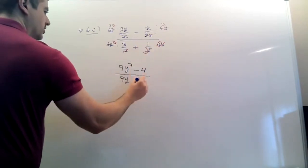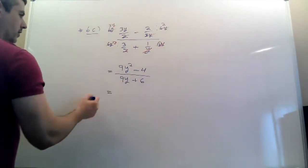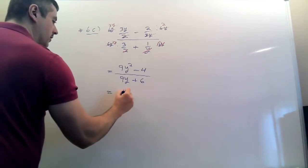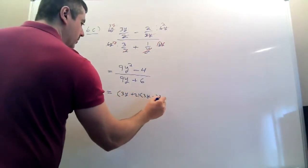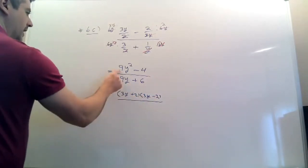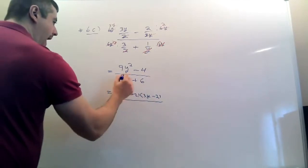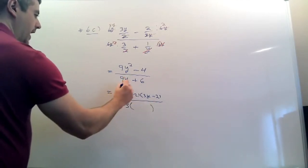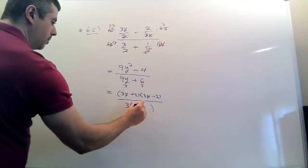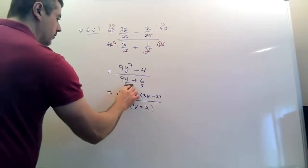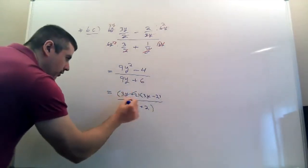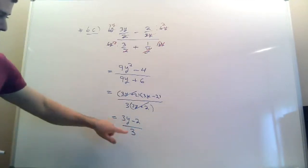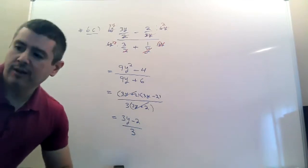So 6 times 1: do 3y times 3, which is 9y. Then 1 times 6 is 6 — that's tricky to spot. Some people try to cross out the nines, which is wrong. The top is a difference of squares: 3y plus 2 times 3y minus 2. The bottom: 6 and 9 are both divisible by 3, so factor out the GCF of 3. Divide away the 3 — 9y plus 6 divided by 3 gives 3y plus 2. Cross those out. You're left with 3y minus 2 over 3. Don't cross out the threes to get y minus 2 — the problem is over; that's your answer.